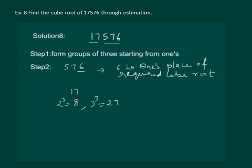So, that means 17 is greater than 2 cube and less than 3 cube. Then, we have to choose the smaller number. So, the smaller number is 2 and its 1's place is also 2.